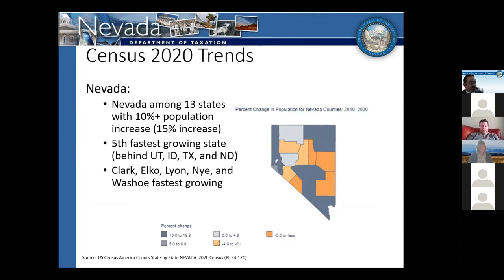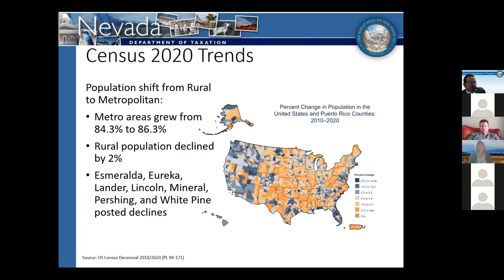Within the state, Clark, Elko, Lyon, Nye, and Washoe were our fastest growing counties over the decade. Nationally, there was a continued shift of population from rural to metropolitan areas — something that's been going on for the last few decades. The rural population declined by share by about 2%. That held true in Nevada: Esmeralda, Eureka, Lander, Lincoln, Mineral, Pershing, and White Pine all posted population declines from the 2010 to 2020 census.